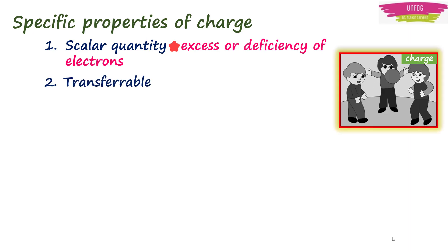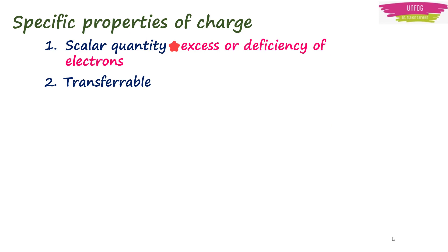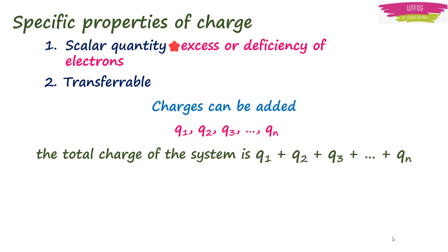As we discussed in the last lecture, charge can be transferred from one object to another, and charges can be added. That is, if a system contains n charges q1, q2, q3, and so on till qn, then the total charge of the system will be q1 + q2 + q3 and so on till qn.